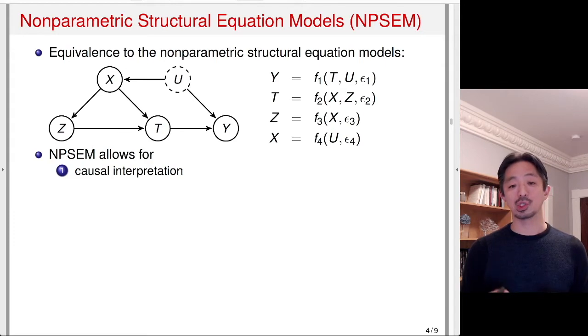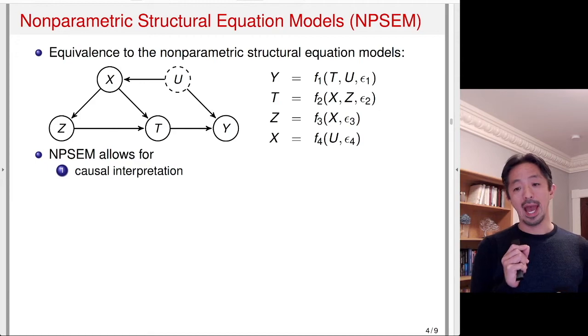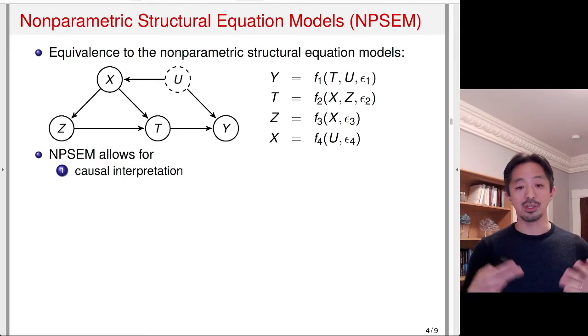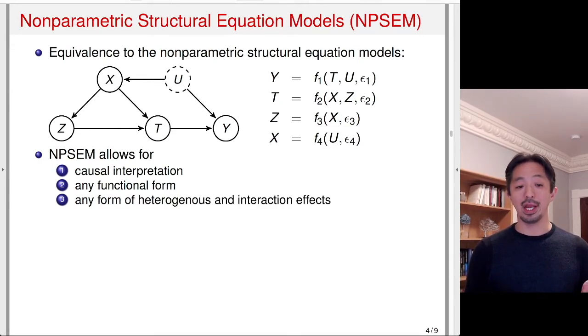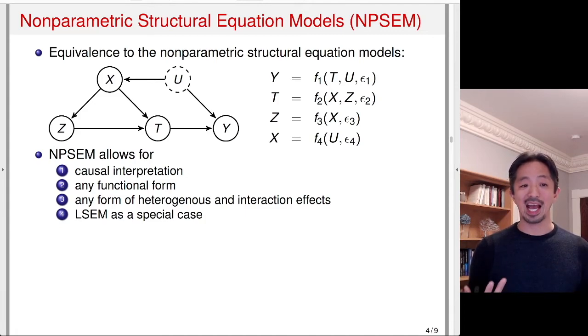This set of structural equation models is very nice because it allows for causal interpretation. For example, T is causally affecting Y or U is causally affecting Y because each arrow represents, in the DAG, a direct causal effect. We can actually give a causal interpretation. This is not just a representation for correlation. It's an actual causal relationship. It takes any functional form. That's why it's called nonparametric. f1, f2, f3, f4 could be any function. What that means is it allows for any form of heterogeneous or interaction effects. It's very general. And the popular linear structural equation model, LSEM, is a special case of this. Originally it was developed as a path analysis for linear equations, set of equations. But the DAG basically generalizes this to any function, nonparametric structural equation models.